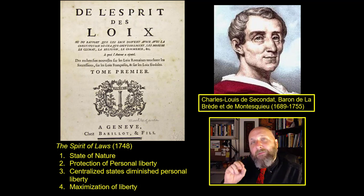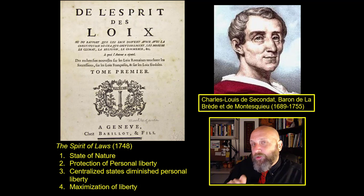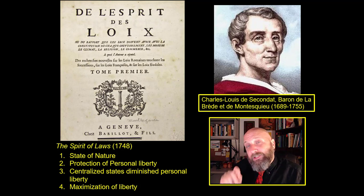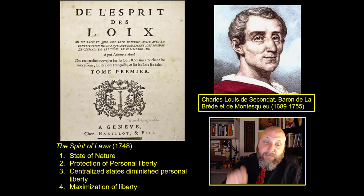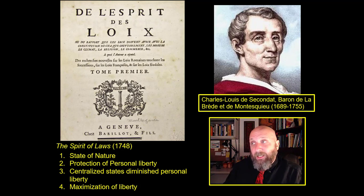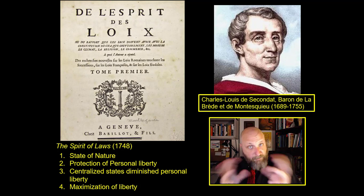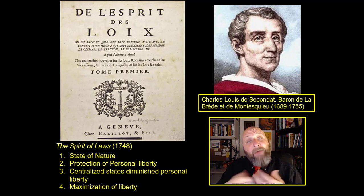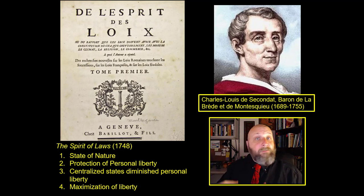The main threat to personal liberty is the government itself. It is people in government who grow cruel and despotic and seek to steal liberty away. Centralized states and powerful governments conspire to diminish personal liberty. So Montesquieu's logic is: people are born free, society makes them unfree, government shows up to maximize personal freedom, but inevitably government becomes corrupt and then diminishes personal freedom. They become the evil they sought to defeat.